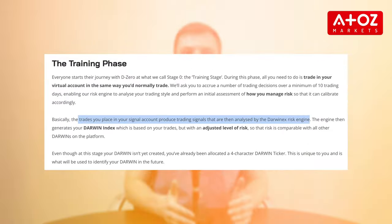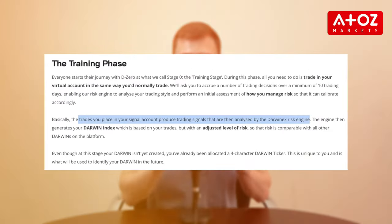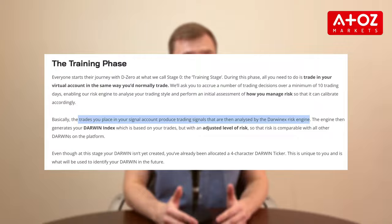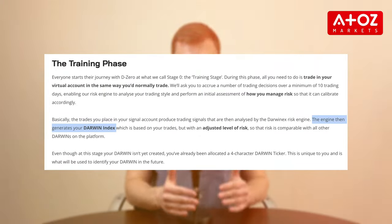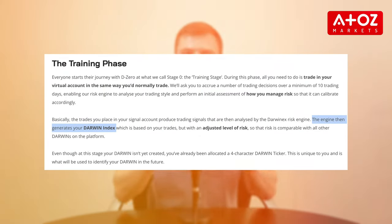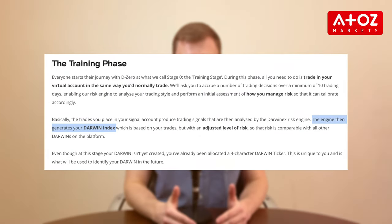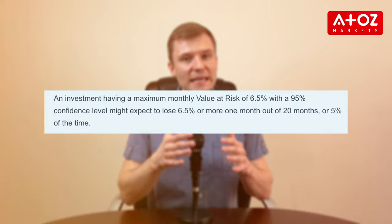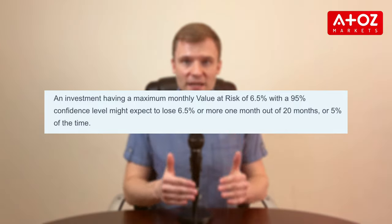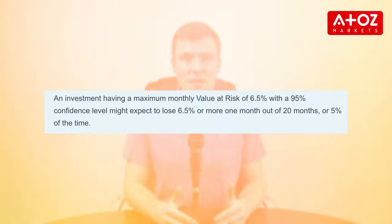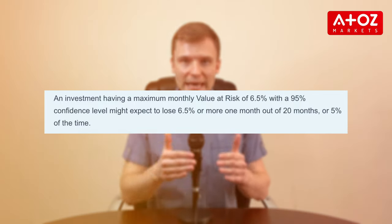Next, you need to learn to distinguish between your signal account and your Darwin index. The signal account is where you execute trades, while the Darwin index is the investable asset created from your trading signals, maintaining a standardized risk level of 10%.